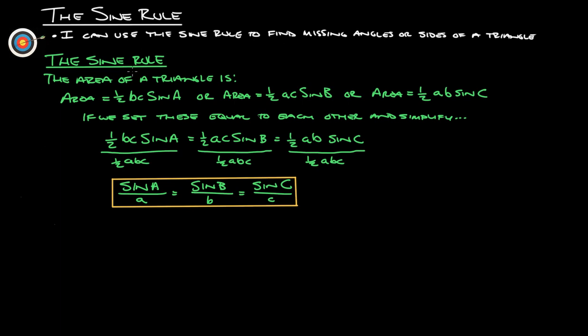So first thing, what is the sine rule? If you remember, the area of a triangle is 1 half BC sine of A or 1 half AC sine B, 1 half AB sine C. There's three different ones, depending on which angle you have and sides you have.